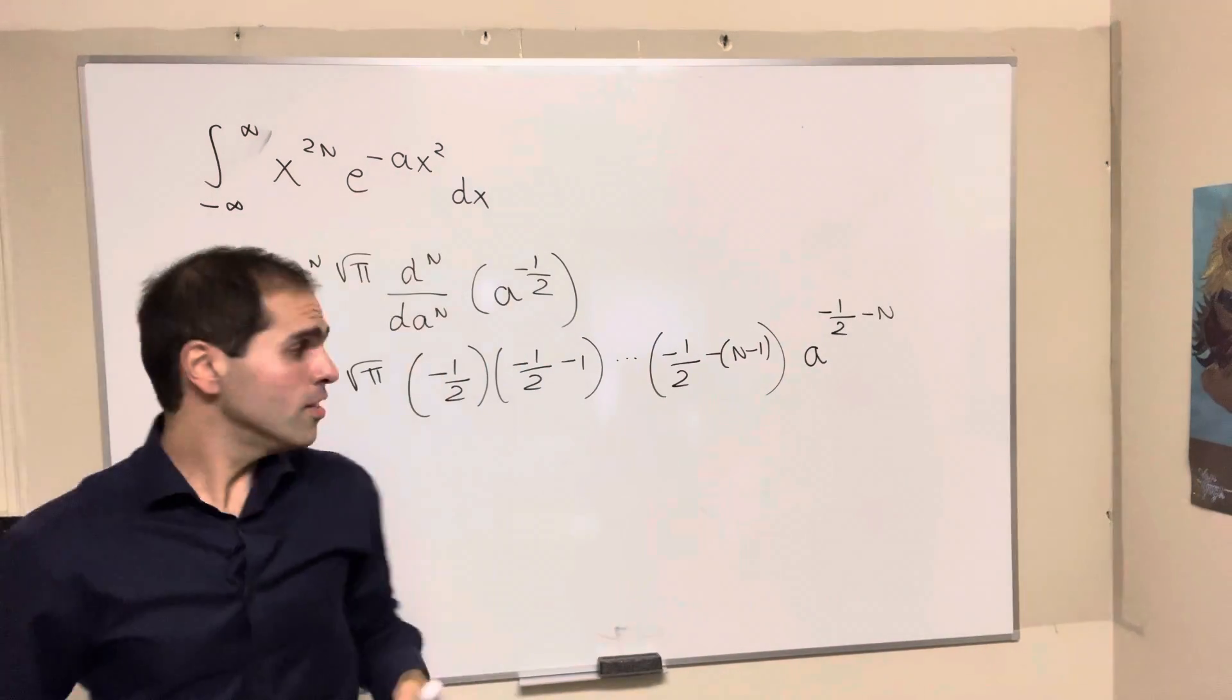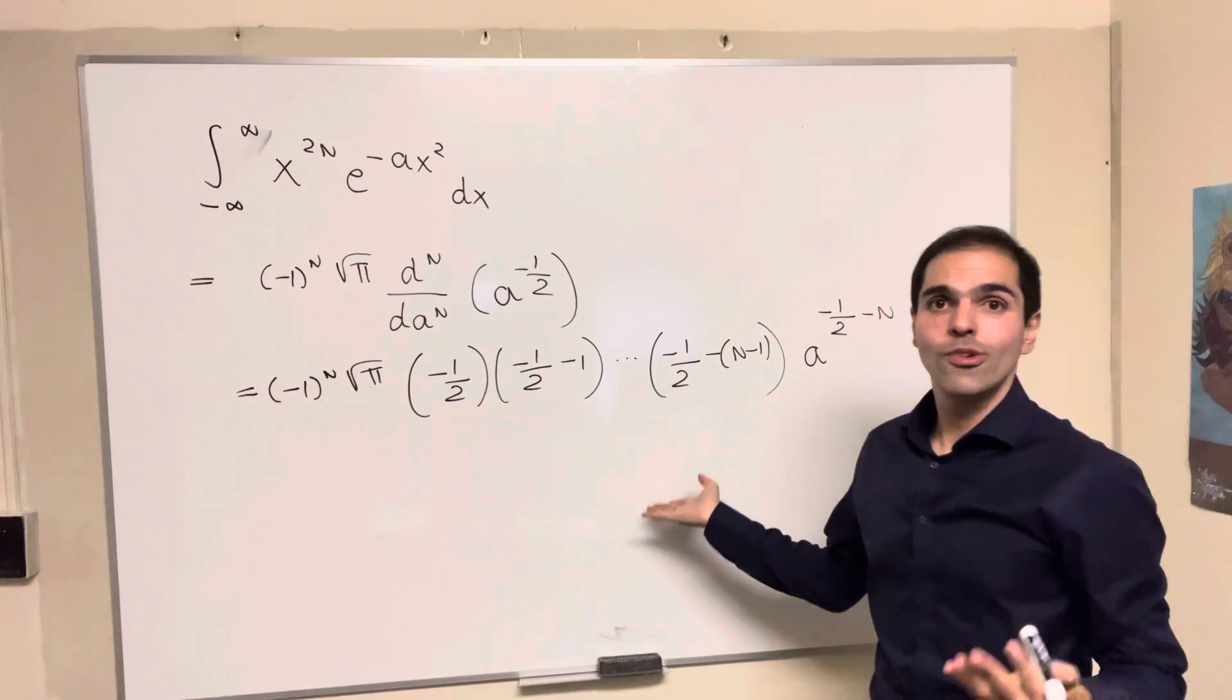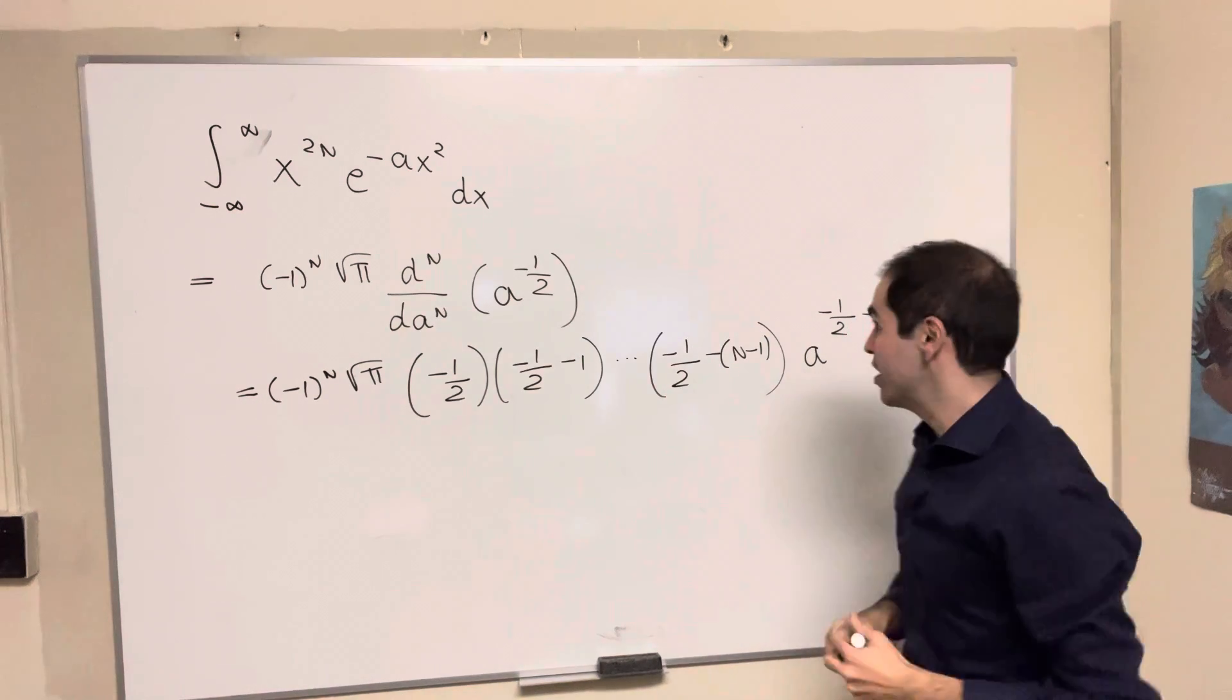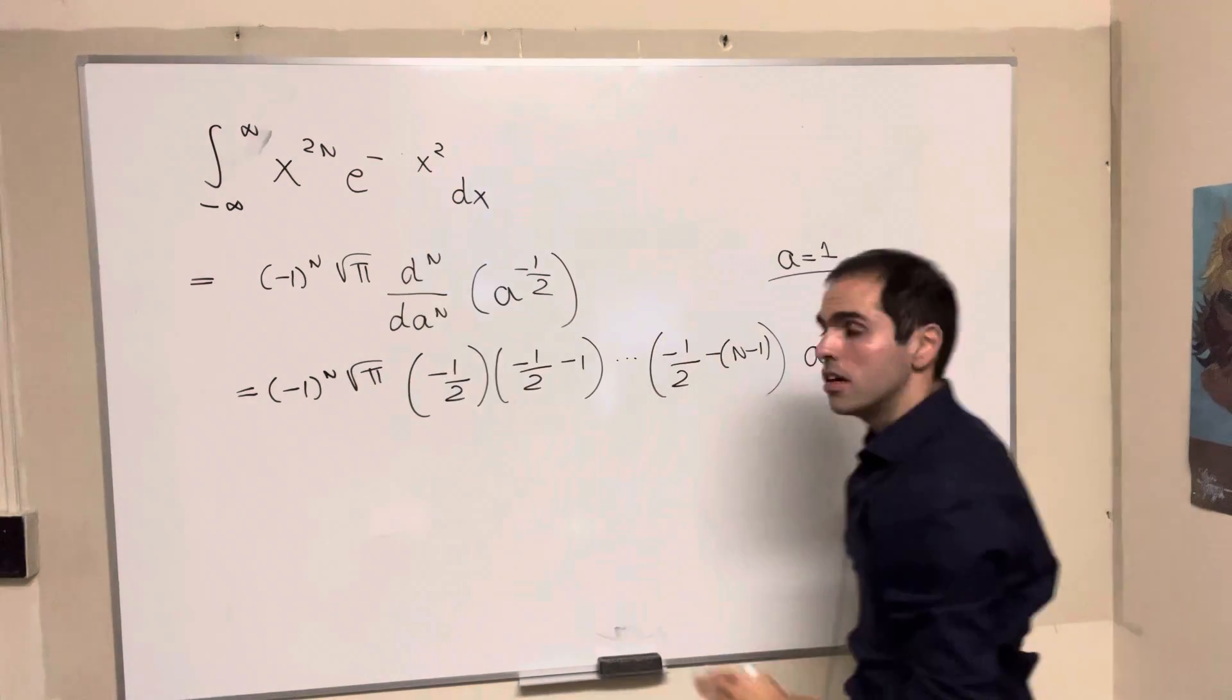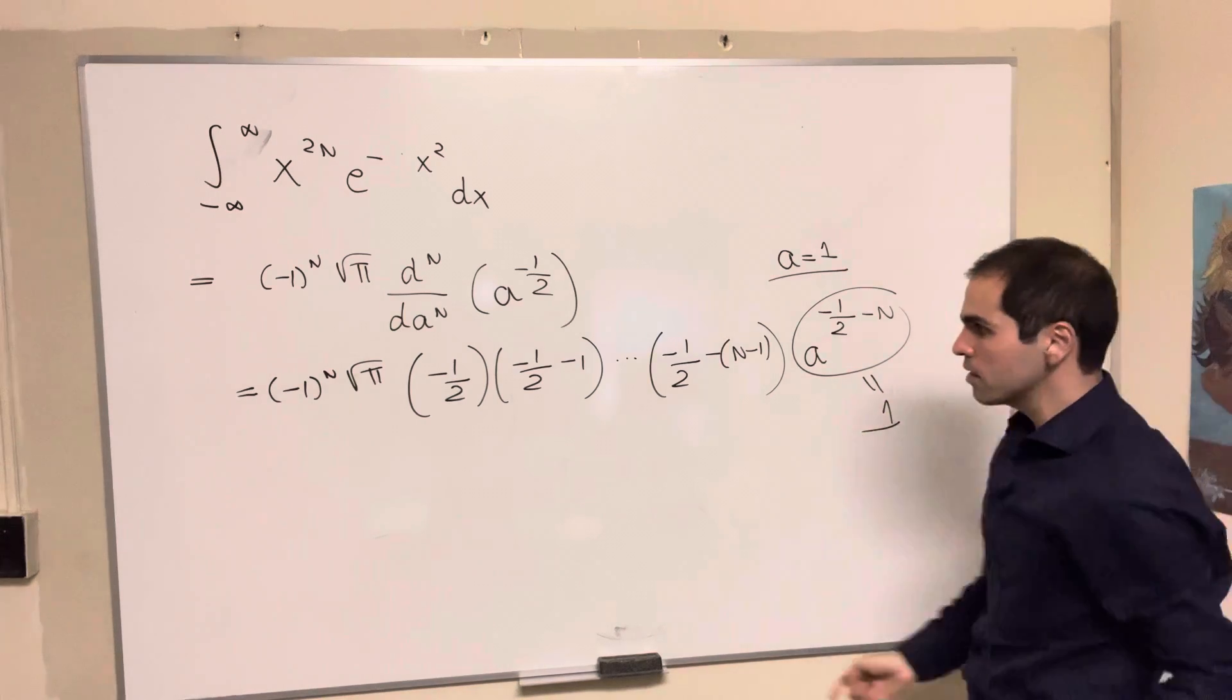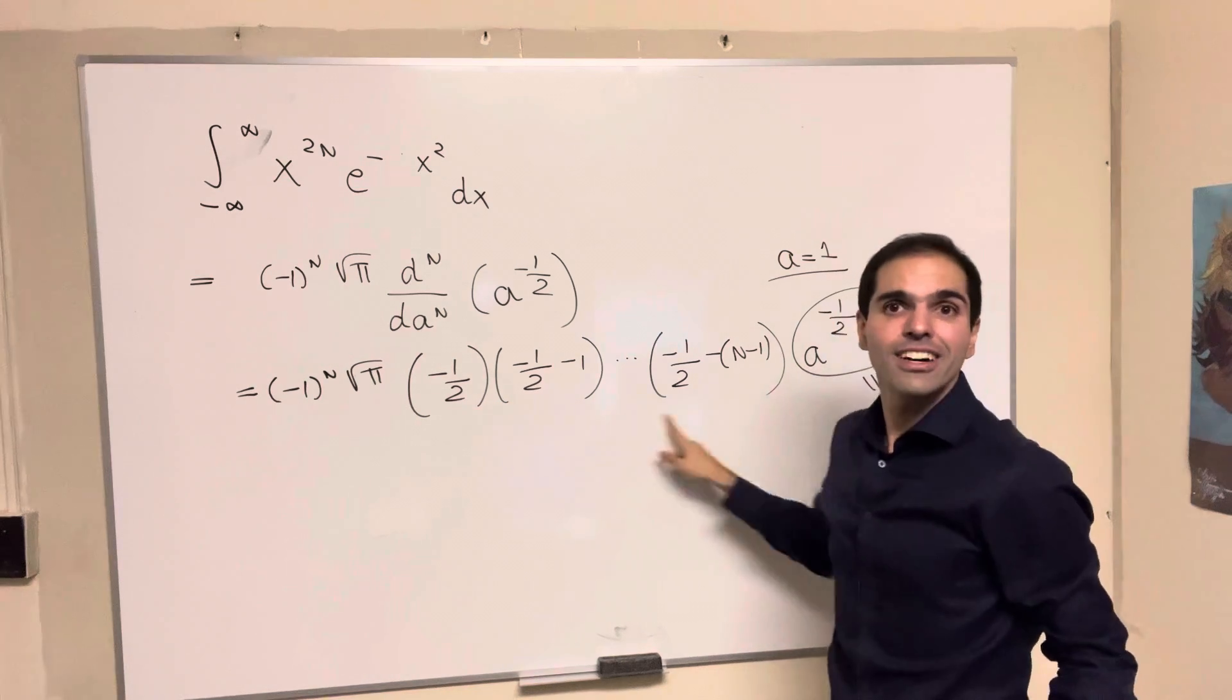Okay, this is good because, again, we have differentiated all the a's. And here is where we now use the fact that we just need a equals 1. Because if a equals 1, then we get our original integral. So, and on the other hand, this becomes 1. So really, all that's left to simplify is to simplify this expression.